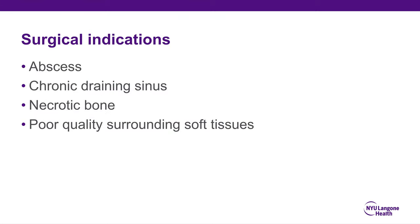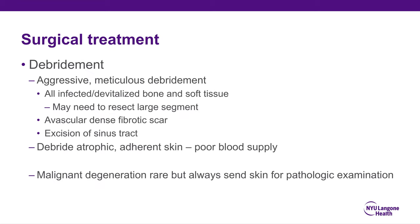Surgical indications for osteomyelitis — because while it is a medical problem, it can be a surgical problem too — include an abscess, chronic draining sinus, necrotic bone, or poor quality surrounding soft tissue. You need aggressive, meticulous debridement. All infected and devitalized bone and soft tissue must be debrided, which may require resection of a large segment of bone. You also have to get rid of avascular dense fibrotic scar; if surrounding soft tissues are avascular, it will never heal. Excise any sinus tracts completely. Debride atrophic or adherent skin because it also has poor blood supply. Although rare, malignant degeneration does happen, so always send skin for pathologic examination.